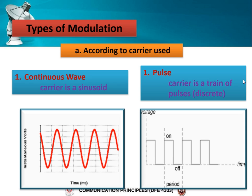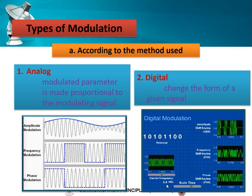The types of modulation — first, according to the carrier used, we have continuous wave and pulse wave, as represented in the figure below. Continuous wave is where the carrier is a sinusoid; for pulse, it is represented by a pulse or train of pulses — discrete signals. According to the method used, we have two types: analog and digital. For analog, the modulated parameter is made proportional to the modulating signal. For digital modulation, we change the form of a given signal. For this Principles of Communication subject, the focus is on analog modulation; digital modulation will be discussed in a later communication subject.